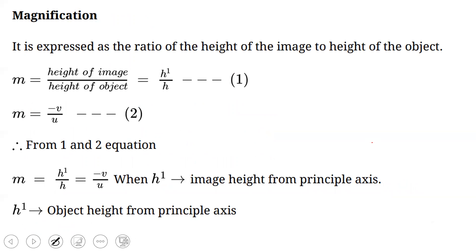Magnification is expressed as the ratio of the height of the image to the height of the object: M = H'/H. For a mirror, this is also equal to −V/U. So M = H'/H = −V/U, where H' is the size of the image and H is the size of the object.